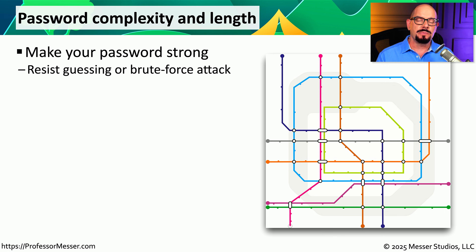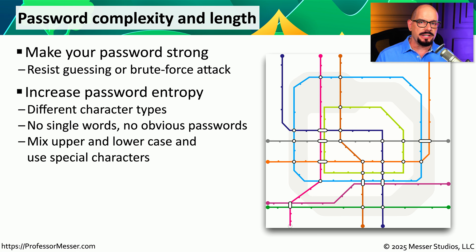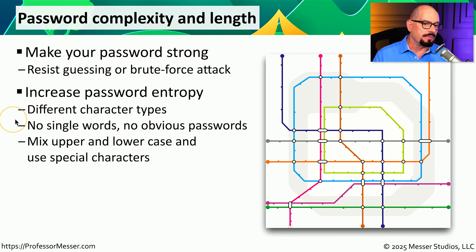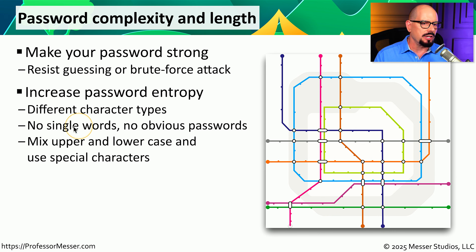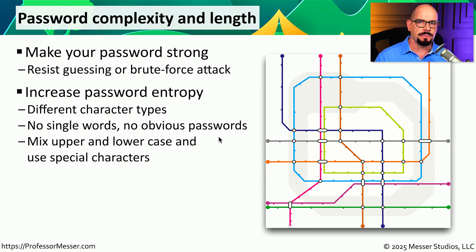In a previous video, we described the process of password brute forcing, where someone tries every possible combination to discover your password. One way to make this very difficult for an attacker is to increase the amount of entropy in a password — a measurement of how unpredictable a password is. You should use different character types, uppercase and lowercase, in a form that does not make up any obvious word found in the dictionary, and include numbers or special characters to increase entropy.